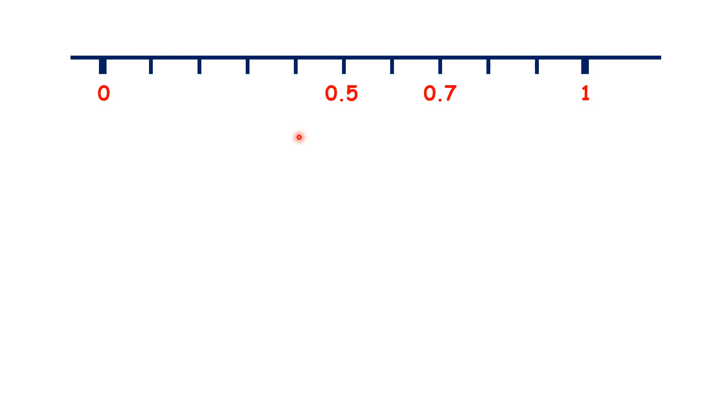And we can see this on a number line. If we have 0.5 and 0.7, 0.6 is right in the middle.